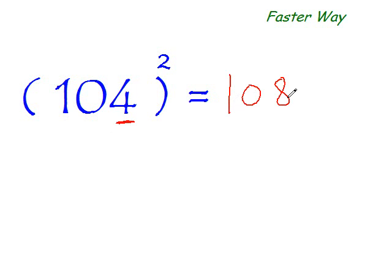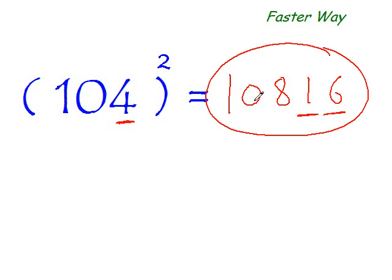So you get the first 3 digits of your answer. Now 2 more digits to go. What is the square of 4? It is 16. So that's your final answer: 10,816. Voila! Isn't that simple? Simple and fast.